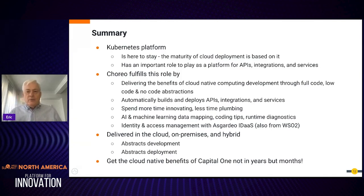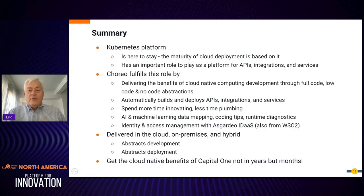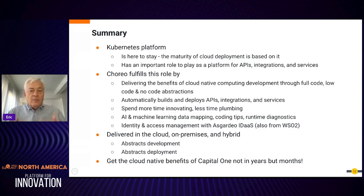Briefly on the Capital One example: Capital One announced earlier this year that they've moved their entire data centers into AWS — they have no more on-prem data centers at all. Their published case studies list the benefits, including digitization and improving customer experience at speed through microservices and the advantages of the cloud. It took four years and significant investment. What we're seeing now with the evolution of cloud-native infrastructure, abstracted development, and Kubernetes-and-Docker-based deployment means we can cut that time to months instead of years.